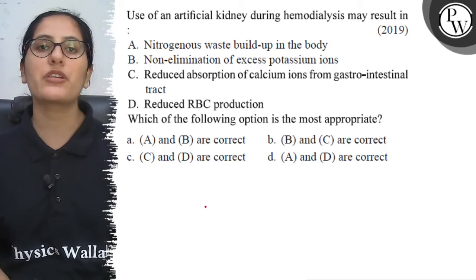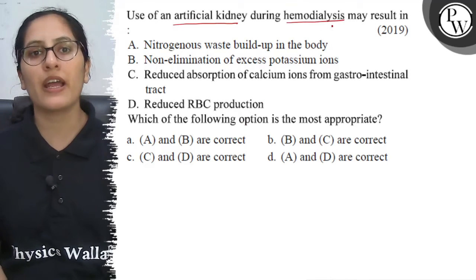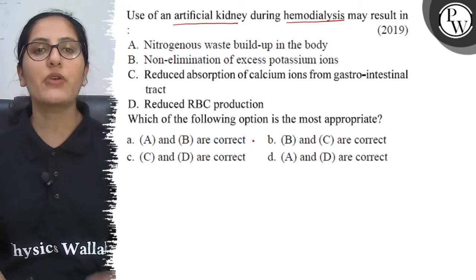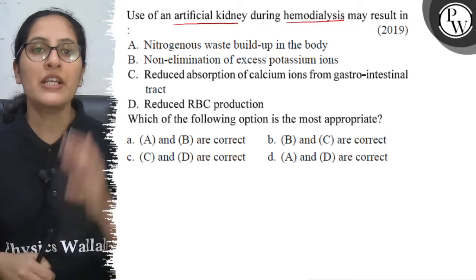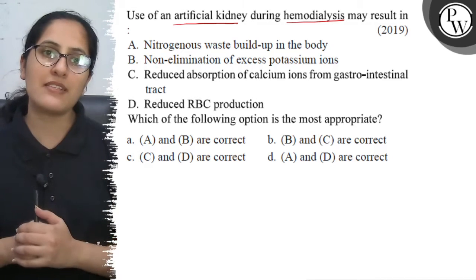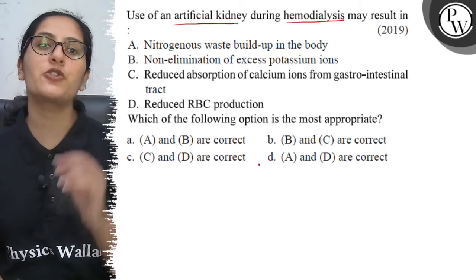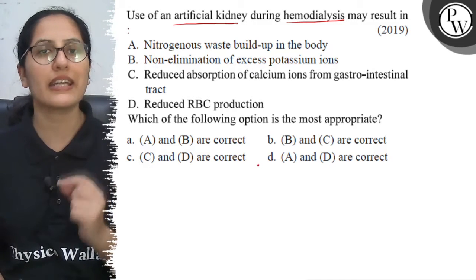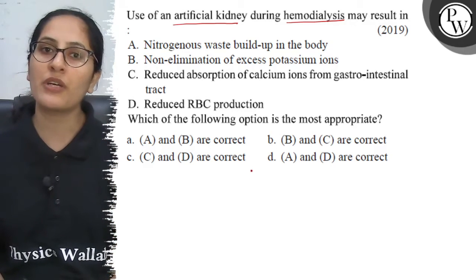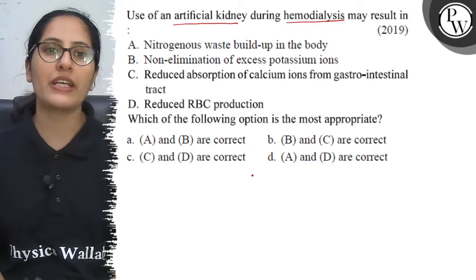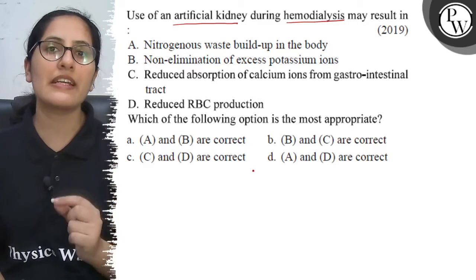The question asks about the use of an artificial kidney during hemodialysis — what will be the result? When the kidney becomes non-functional, an artificial kidney is used in a process called hemodialysis. The artificial kidney performs all the functions that a normal kidney would perform.